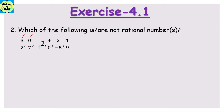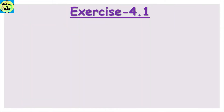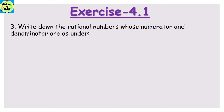An integer can be put in p/q form by placing a denominator of 1, so integers are also rational numbers. For 4/0: the denominator cannot be 0, so this is not a rational number. For 2/5: yes, it is a rational number. And 1/9 is in p/q form so it is also a rational number. Therefore the answer is only 4/0 is not a rational number.